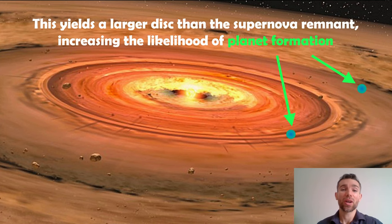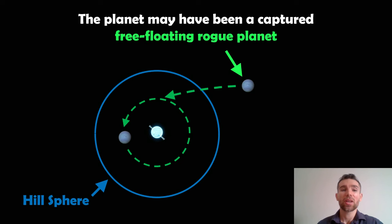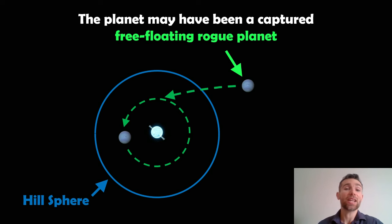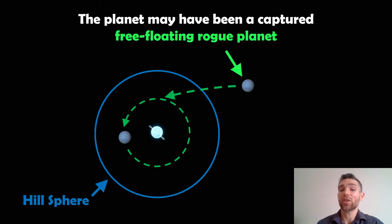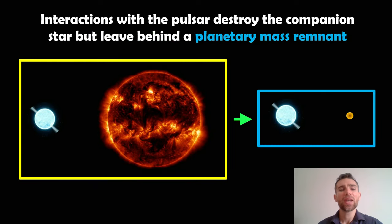A fourth scenario is that it could be a rogue planet — a free-floating planet that doesn't have a star. There are actually lots of those floating around, and if one got close enough to the pulsar, it could be gravitationally captured. With the right velocity and trajectory, coming within the hill sphere, it could end up on a new orbit around the pulsar. This would be a planet that formed around another star, was ejected from its system, and has now been gravitationally captured by the pulsar.